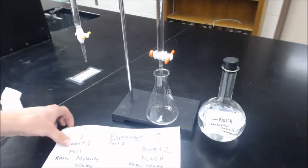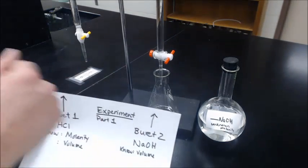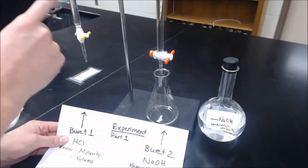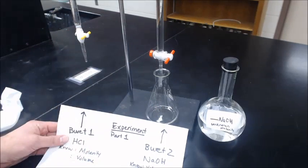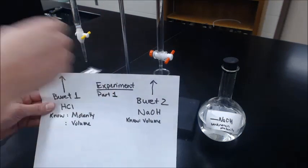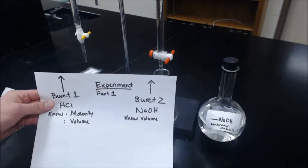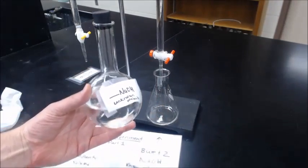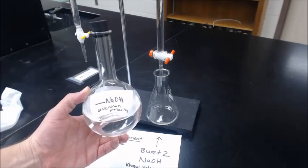Then you know you're done. At the end point, you'll have the exact same number of moles in the flask of hydrochloric acid and sodium hydroxide. You'll know the molarity and volume from HCl, and you'll know the volume here, and you'll solve for the molarity. You'll be able to figure out the concentration of sodium hydroxide.